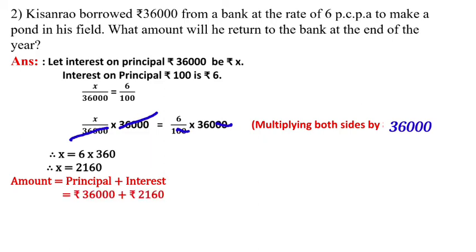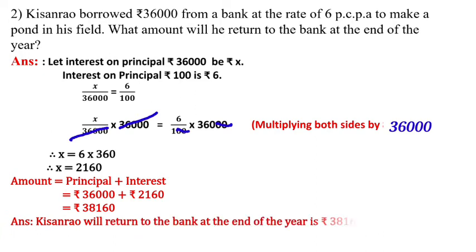And interest we got ₹2,160. Total amount is ₹38,160. It means Kisanrao will return to the bank at the end of the year is ₹38,160.